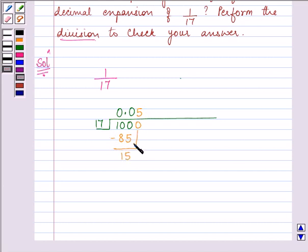0 will get dropped down from above to make it 150, and then 17 multiplied by 8 will give us 136. Remainder left is 14.